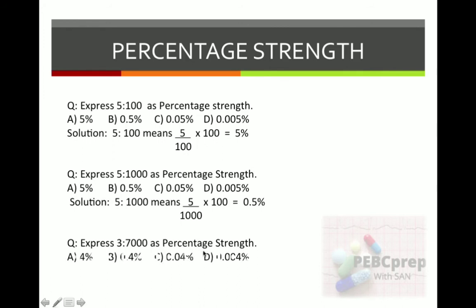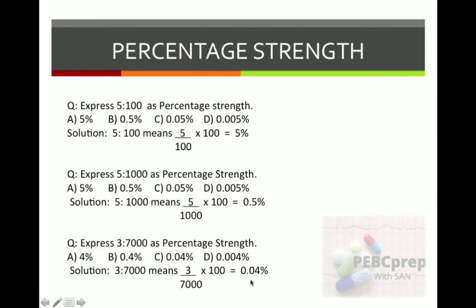Another example: express 3 is to 7000 as percentage strength. Options: A) 4%, B) 0.4%, C) 0.04%, D) 0.0004%. Solution: 3 ÷ 7000 × 100 = 0.04%. Please use on-screen calculators — according to the PEBC website, you will get an on-screen calculator in the exam, not a physical calculator. Do not use cell phones; try to solve on a laptop with the on-screen calculator.